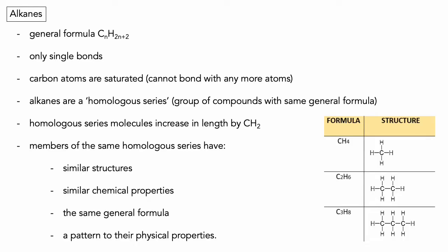Our first group of hydrocarbons — molecules made of carbon and hydrogen — are alkanes. They have a general formula of CnH(2n+2), which tells you the relationship between the number of carbon and hydrogen atoms. For example, propane C3 would have 8 hydrogen: 2×3+2=8. For decane C10 we'd have H22: 2×10+2=22. As already mentioned, alkanes by definition have only single bonds between carbon atoms, as seen in methane, ethane, and propane examples.